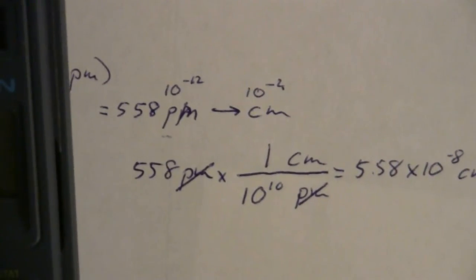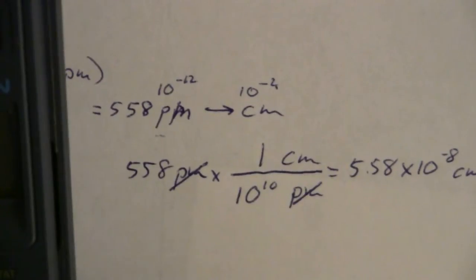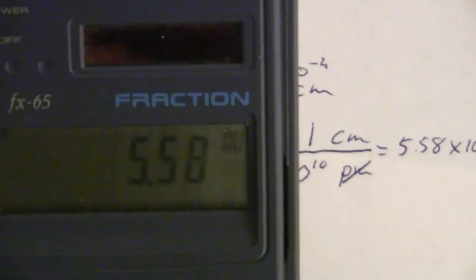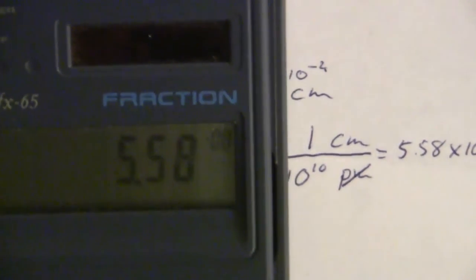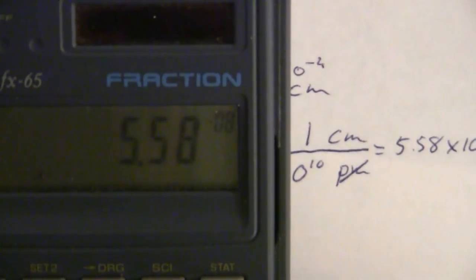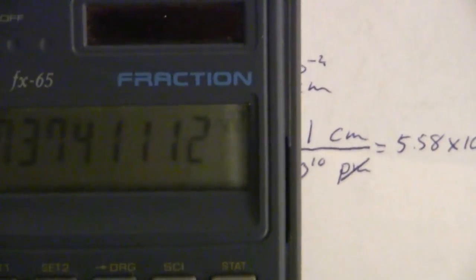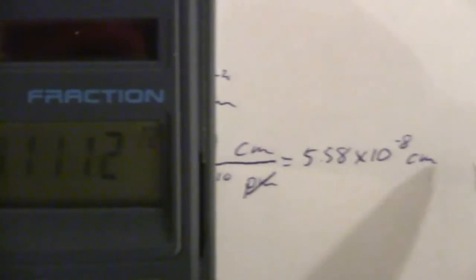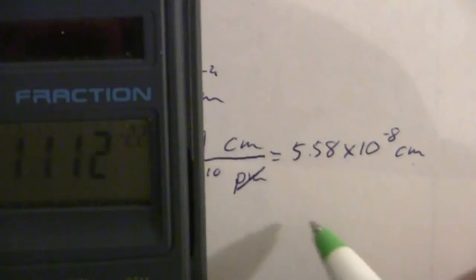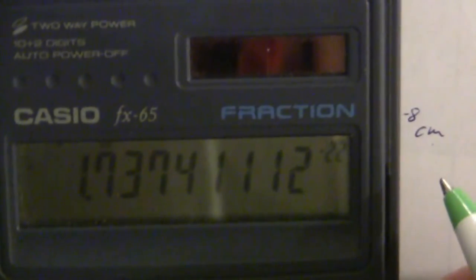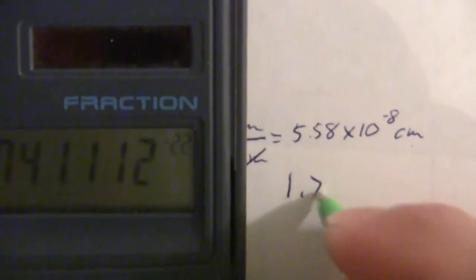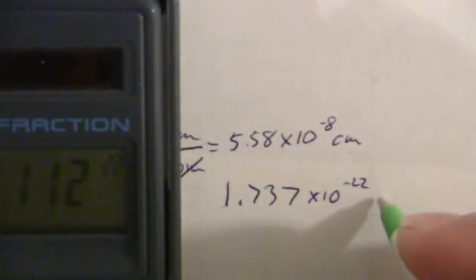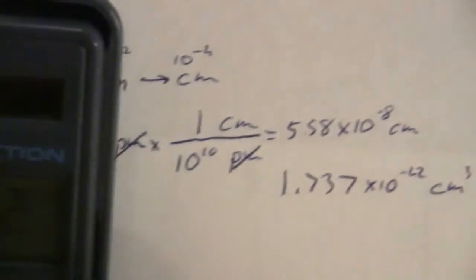So this may look a little better on the calculator. 5.58 exponent negative 8th, and we're going to cube this. So now we have a very small number of cubic centimeters. So 1.737 times 10 to the minus 22 cubic centimeters.